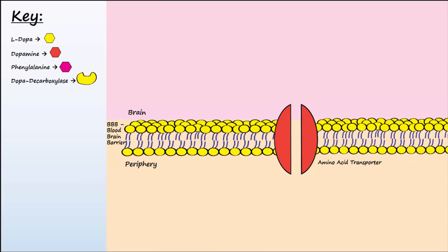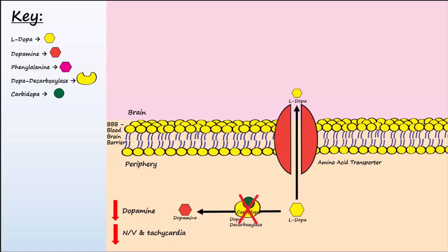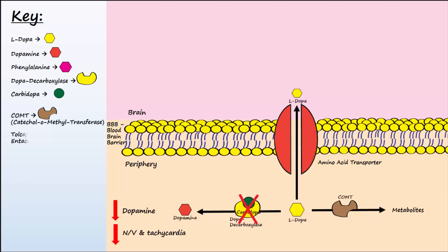A decarboxylase inhibitor known as carbidopa will inhibit the actions of decarboxylase. Decarboxylase inhibitors are given with L-DOPA to prevent the breakdown of L-DOPA into dopamine in the periphery. This decreases dopamine in the periphery to limit dopamine-caused nausea, vomiting, and tachycardia, and since L-DOPA is not being broken down, more L-DOPA is allowed to cross into the brain. L-DOPA can also be broken down in the periphery into metabolites by the enzyme COMT, which stands for catechol-O-methyltransferase. The medications tolcapone and entacapone can be given to prevent this breakdown, consequently increasing the amount of L-DOPA available to cross the blood-brain barrier.